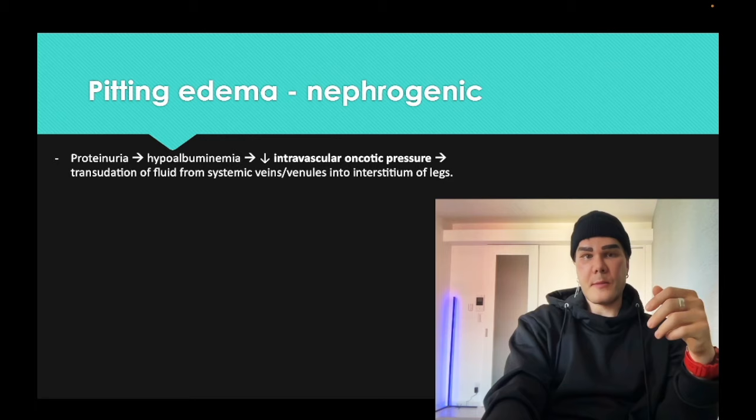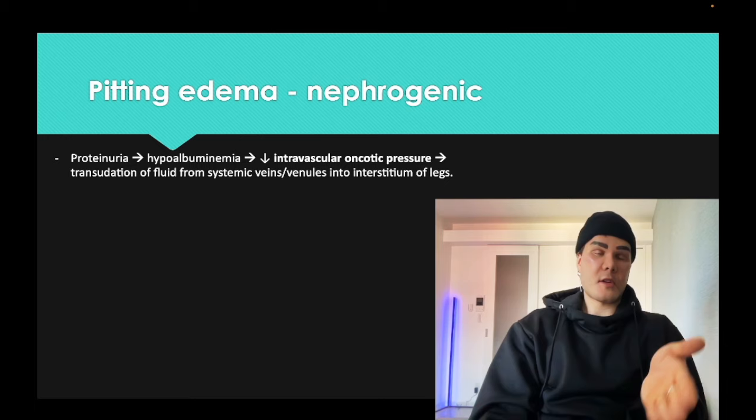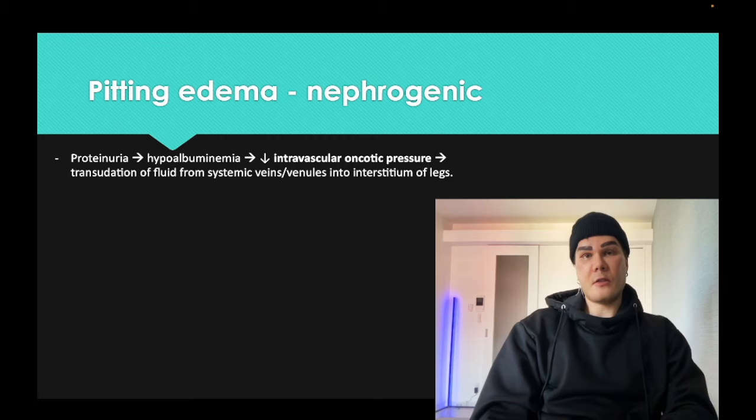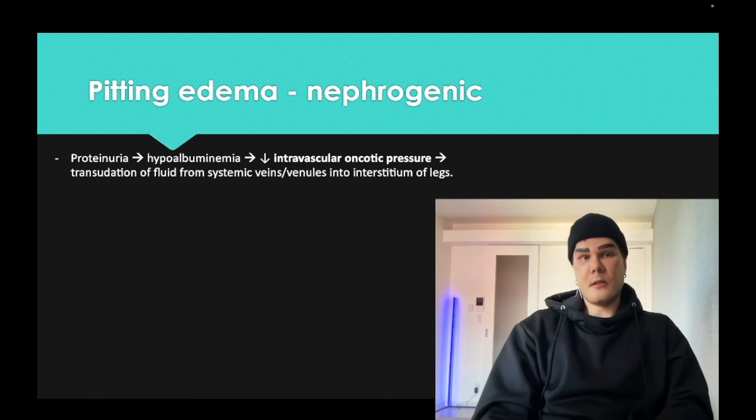For nephrogenic etiology: if we are losing protein in the urine, we have nephrotic syndrome. Similar to the liver where we have decreased albumin, we have decreased intravascular oncotic pressure and extravasation of transudate into the interstitial spaces. So for cardiogenic it's increased hydrostatic pressure in the veins; for hepatic and nephrogenic, it's decreased intravascular oncotic pressure.